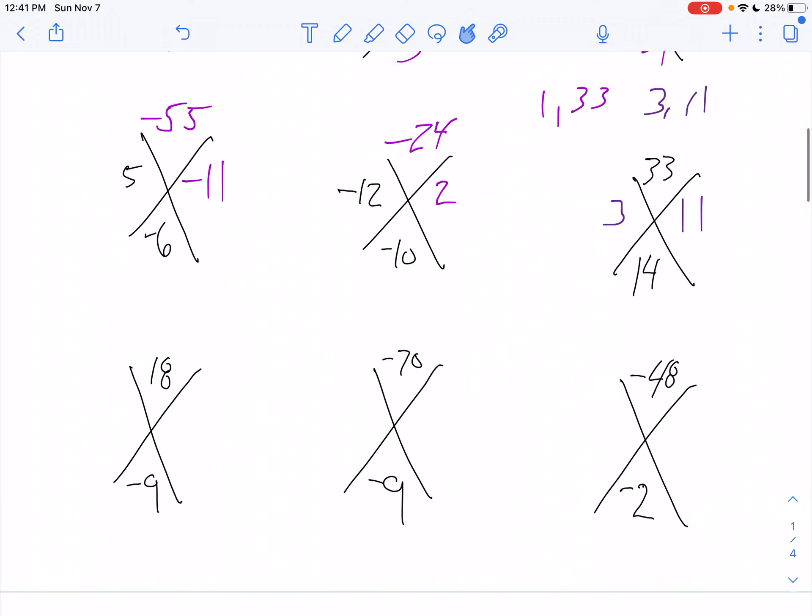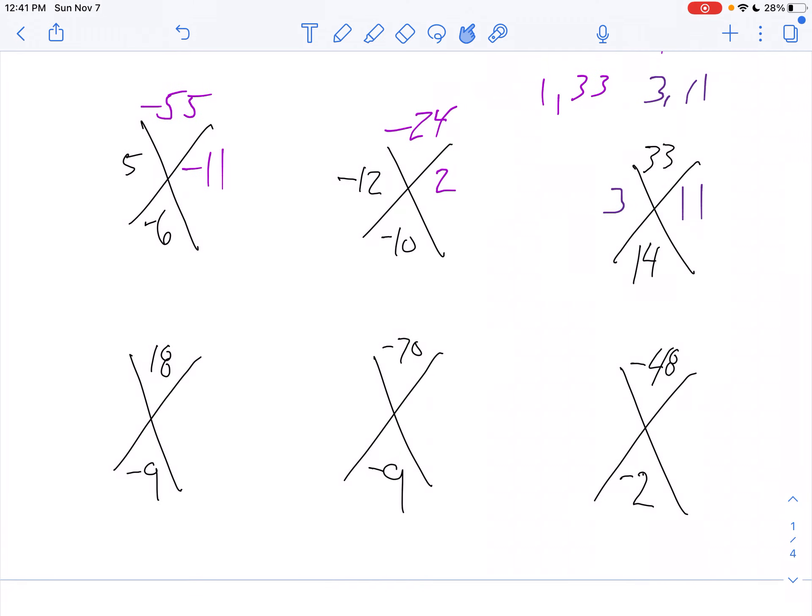Okay, let's take a look at some others here. So, I'm going to look at the bottom now. Now, notice I look at the signs here. I multiply to a positive and I add to a negative. The only way I can do that is to have two negative numbers. So, I start going through my process.